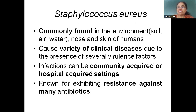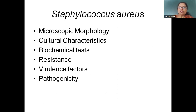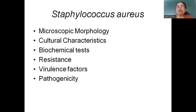Staphylococcus aureus exhibits a lot of resistance — it is already resistant to penicillin and methicillin, and it can be called a superbug nowadays. In today's lecture, I will be talking about microscopic morphology and culture characteristics. The rest — biochemical tests, resistance, virulence factors, and pathogenicity — will be covered in different lectures, as I'm continuing with small focused sections so students can revise each topic clearly.